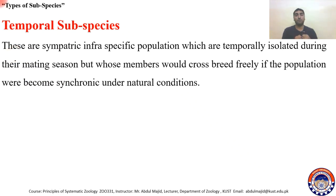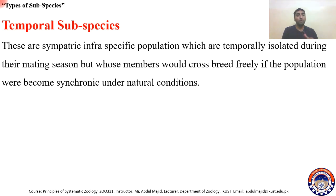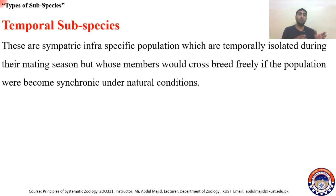Another type is temporal subspecies. These are sympatric infraspecific populations — living in the same region, not geographically isolated — but temporarily isolated during their mating season. Their mating time is not synchronic; it is allochronic, meaning one population breeds in an early season and the other breeds in a later season.